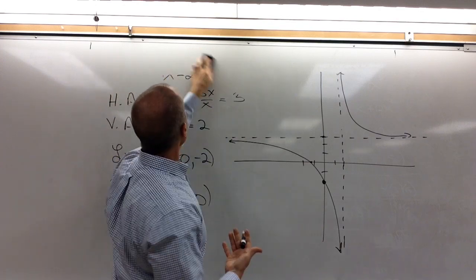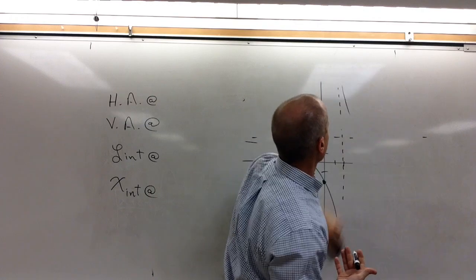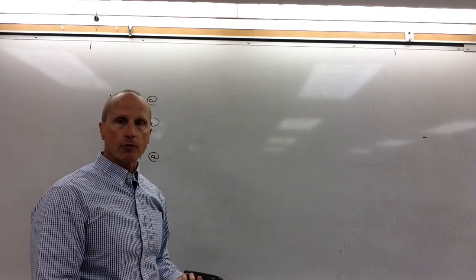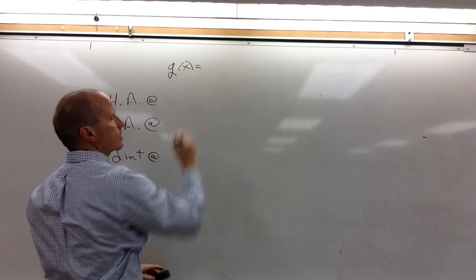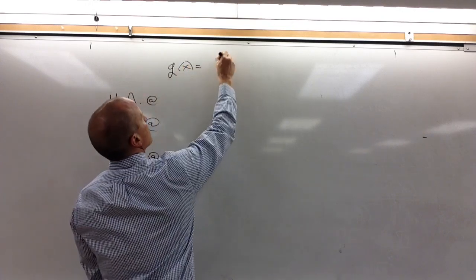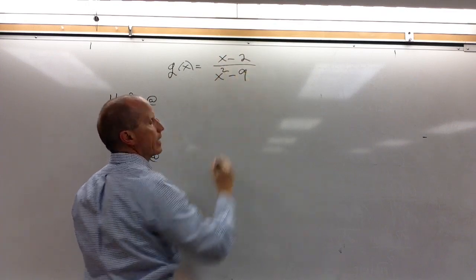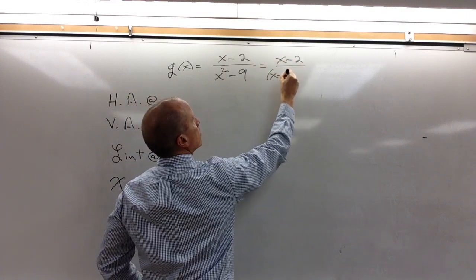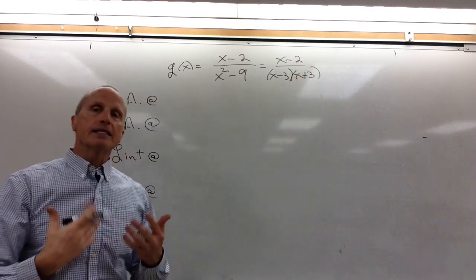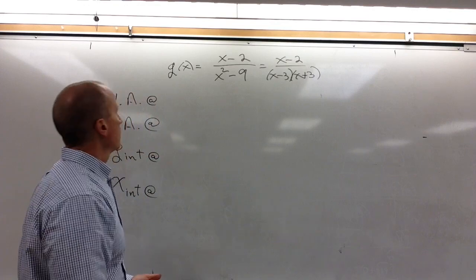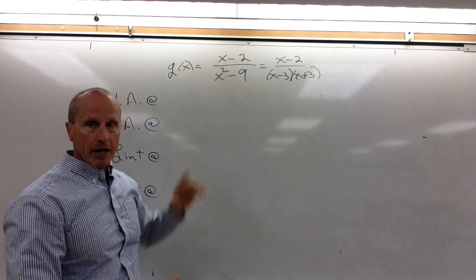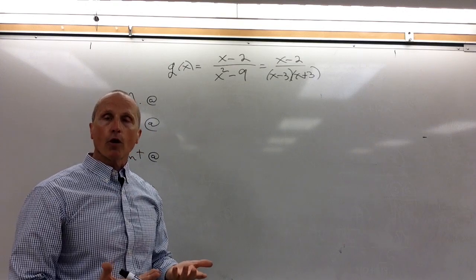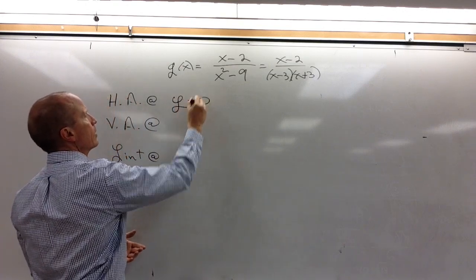Now let's try another one — a little bit different type. We're going to look at four different types today, and after these four I think you'll find it very easy to graph most any rational function. Let's look at g(x) = (x − 2) over (x² − 9). We might want to factor the denominator so we can see what allows it to be zero. Notice the degree of the denominator is larger than that of the numerator. In that case, you will always have a horizontal asymptote and it will always be the x-axis, or the line y = 0.